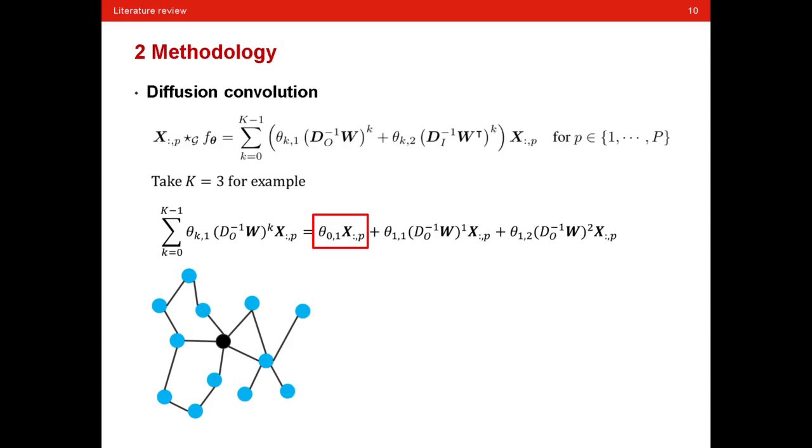The formula is hard to explain directly. Now let's give an example to explain better. Let's take this part and unfold it to three parts. As you can see, if k equals to 3, it can be unfolded in three parts. First, we will have a look of this part. Here, this scalar theta is directly multiplied with the input. This indicates that for a certain target road, if we want to predict its traffic flow, we will consider its old traffic feature.